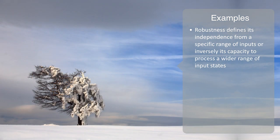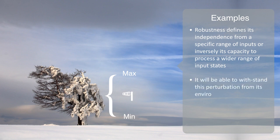To illustrate this further, we might think about a tree withstanding the force of wind blowing against it. The tree has a certain tensile strength through its capacity to bend within a certain range of input values to the force exerted upon it. It will be able to withstand this perturbation from its environment. The wider the range to these input values, the more robust the tree will be.